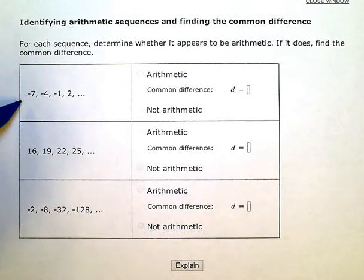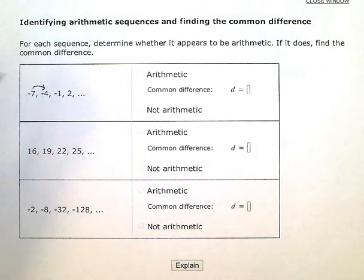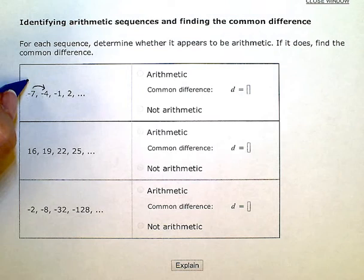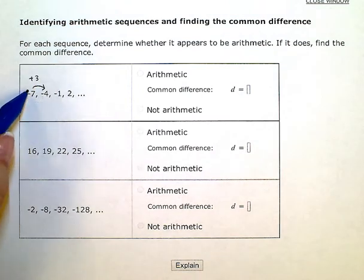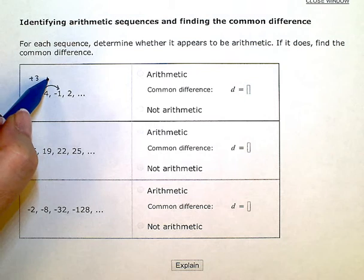So if I look here, to get from negative 7 to negative 4, to get from the first term to the second term, I added 3. So then let's keep testing and see if this add 3 pattern continues. To get from negative 4 to negative 1, again, add 3.